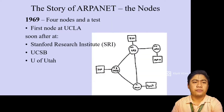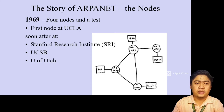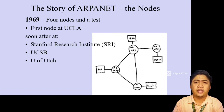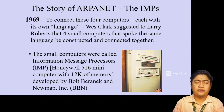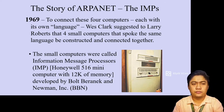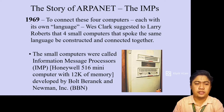The four nodes were launched during 1969. The first node was at the University of California in Los Angeles, followed by the Stanford Research Institute, the University of California at Santa Barbara, and the University of Utah. To connect these four computers, each with its own language, it was suggested that four small computers speaking the same language be constructed and connected together. Those small computers were called Information Message Processors, specifically the Honeywell 516 minicomputer with 12K of memory, developed by Bolt Beranek and Newman.